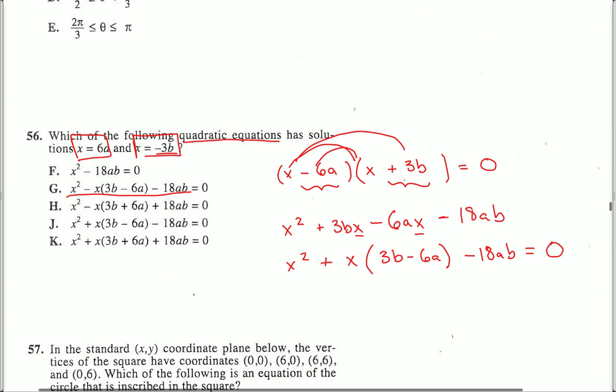x squared minus x times 3b minus 6a minus 18ab. That's letter choice J.